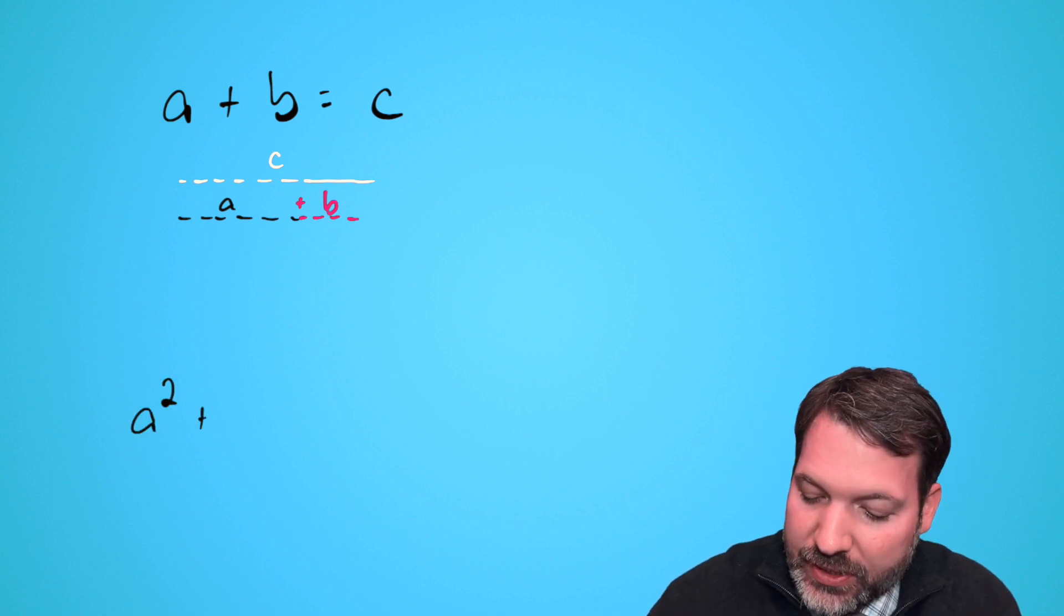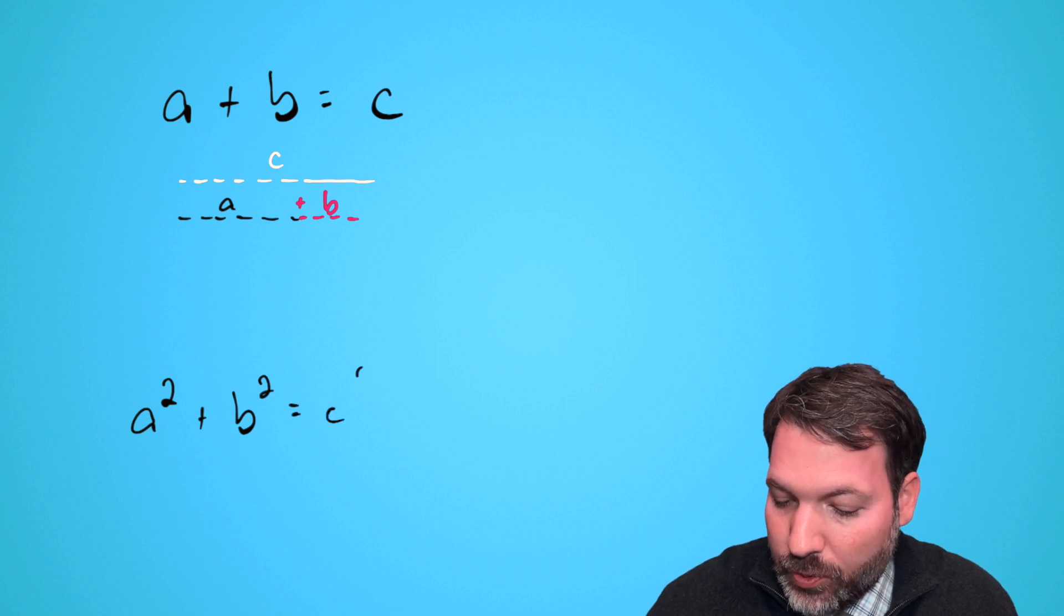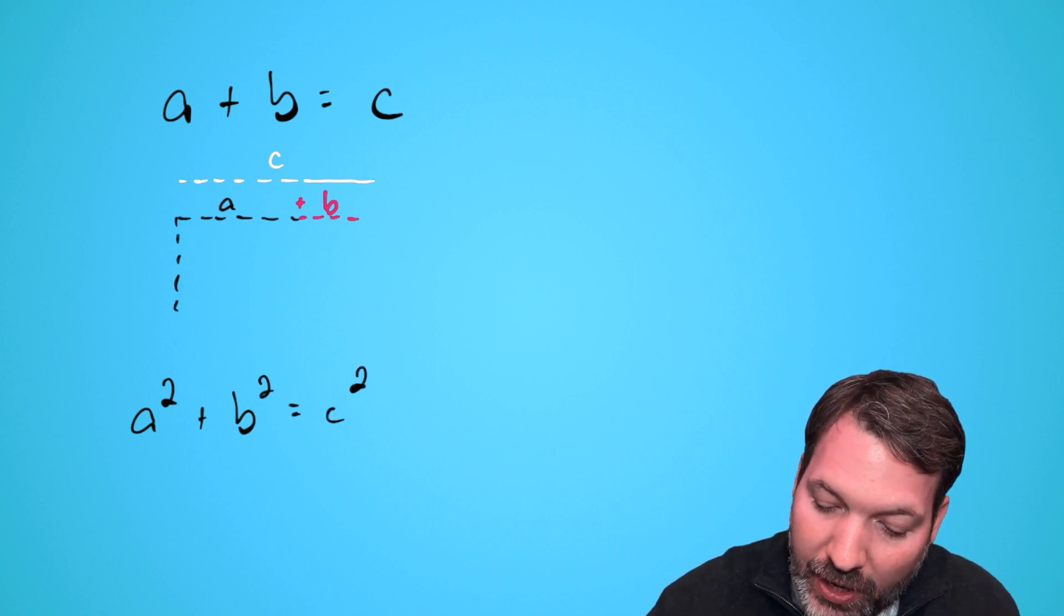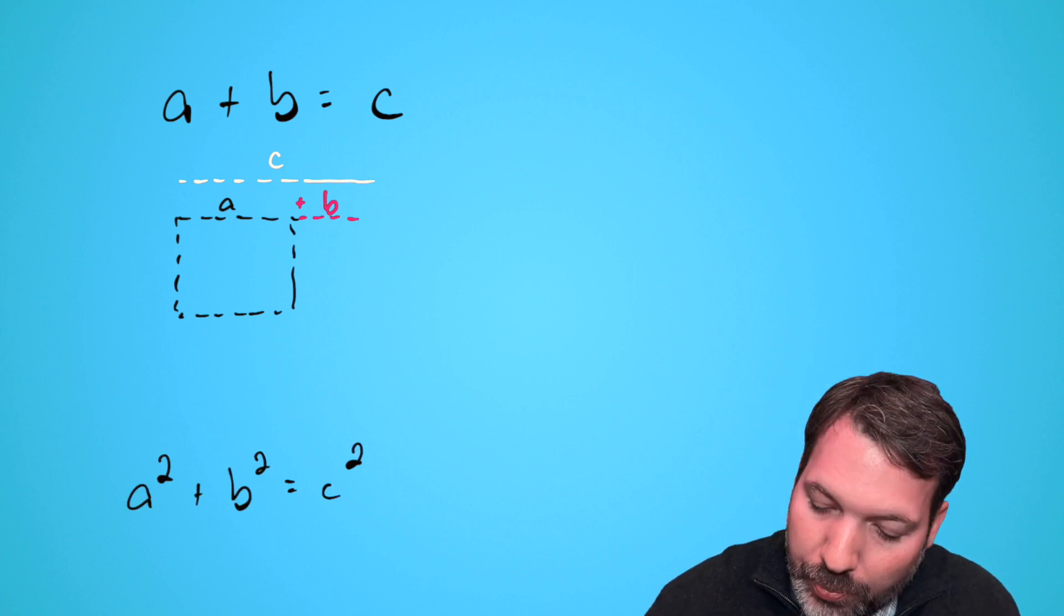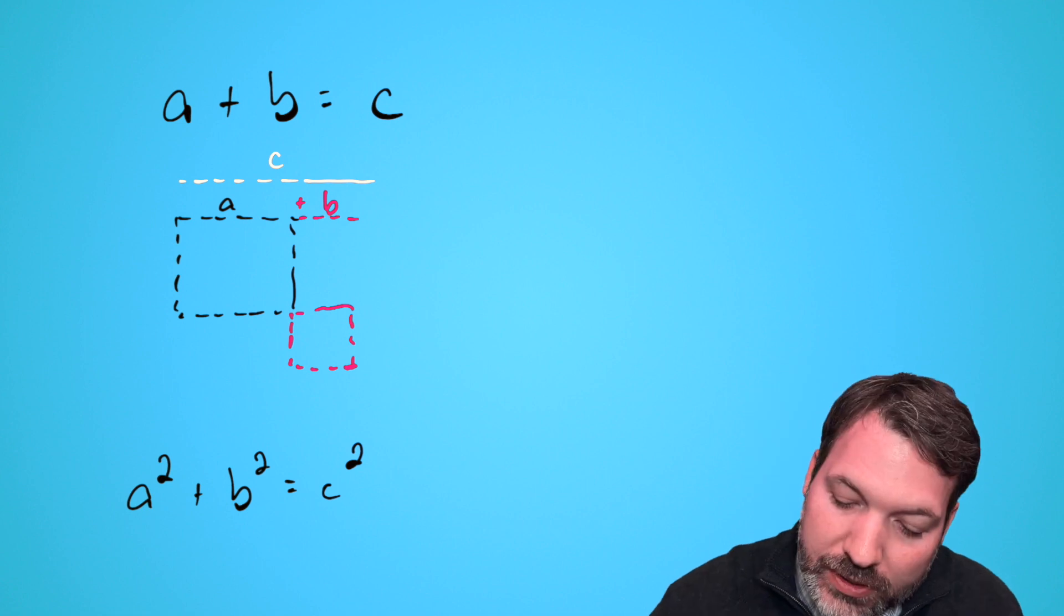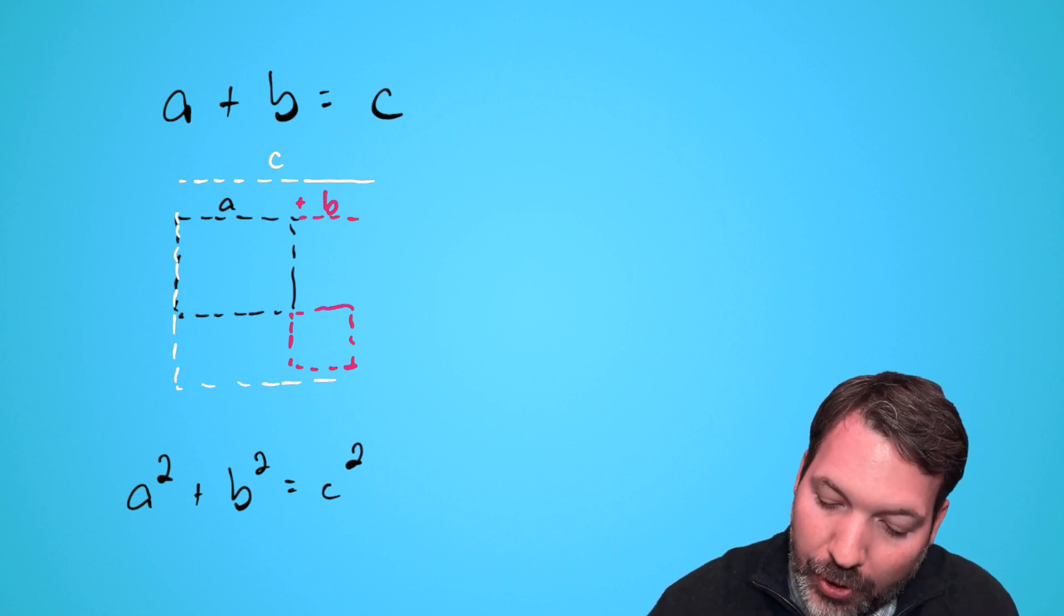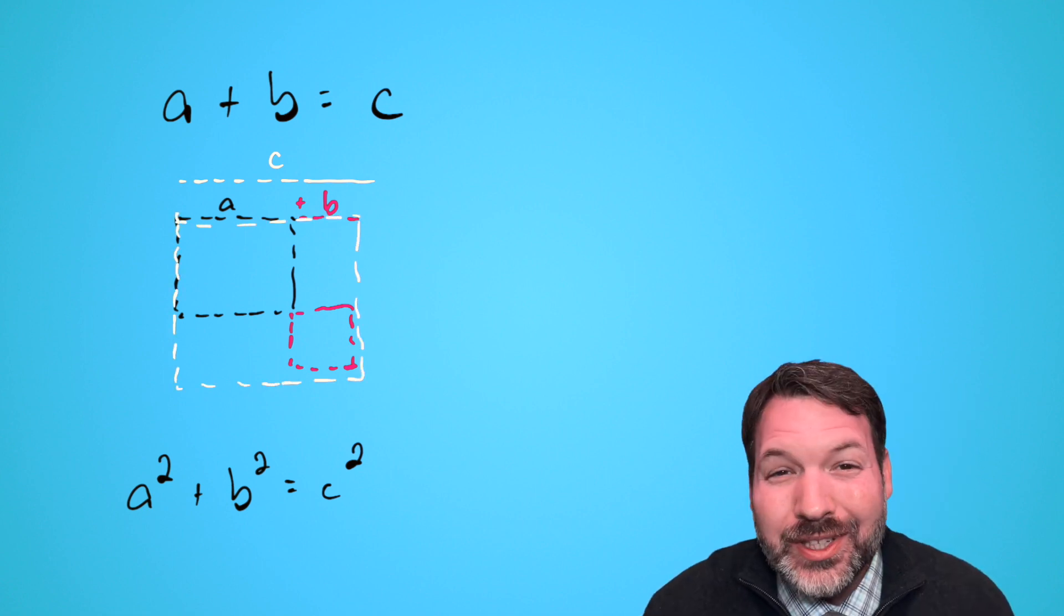If what we want to say is that a² + b² = c², we're literally saying the a square, the square with a length of a, plus the b square, the square with a length of b, needs to be equal to this larger outer c square. But you can see that's not true.